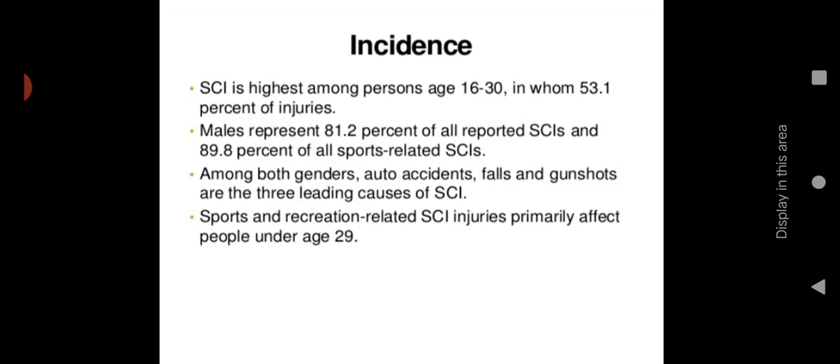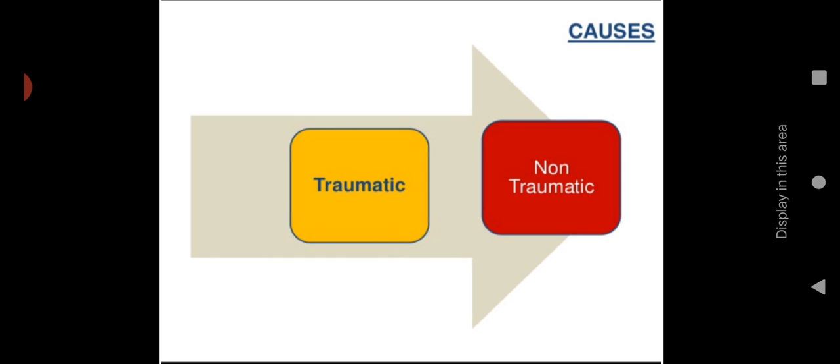Among both genders, auto accidents, falls, and gunshots are the three leading causes of spinal cord injury. Automobile accidents such as car or bike accidents, falls from height, and gunshot wounds due to social conflicts are the main causes. Sports and recreation-related spinal cord injuries primarily affect people under age 29.